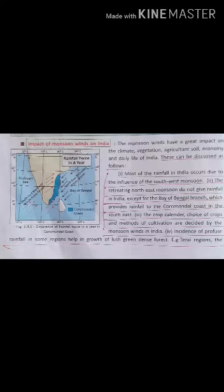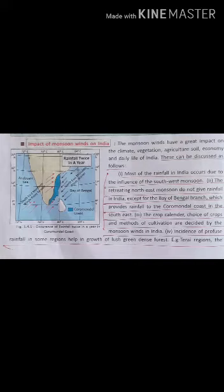The impact of monsoon winds in India: Monsoon is a seasonal wind. One blows in the rainy season called the south-west monsoon, and the other blows in winter called the north-east monsoon. The south-west monsoon blows from the Indian Ocean to Indian landmasses during the rainy season, bringing heavy rainfall. The north-east monsoon is a dry wind because it blows from land to sea during winter, and does not bring rainfall except on the Coromandel coast of Tamil Nadu.